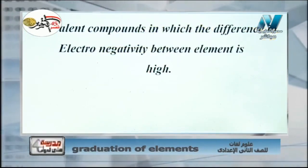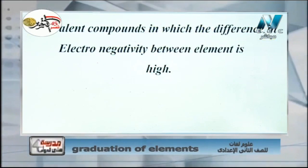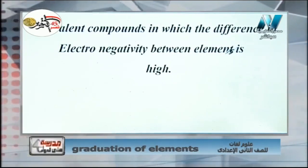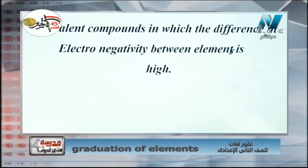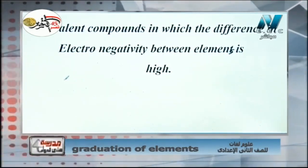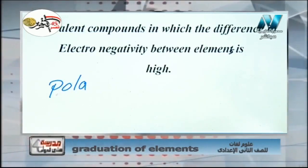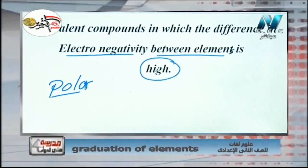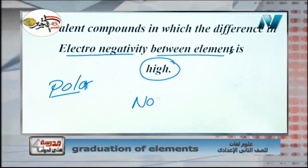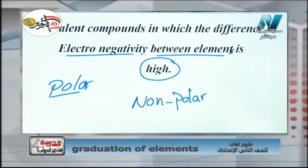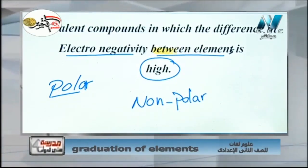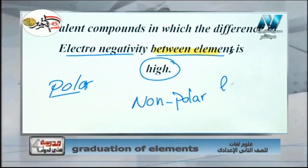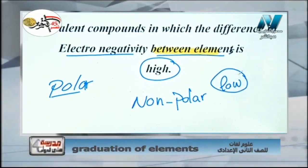Number four — a covalent compound in which the difference in electronegativity between elements is high is called a polar compound, for example water. A non-polar compound has a low difference in electronegativity between its elements. We differentiate between polar and non-polar compounds according to the difference in electronegativity.